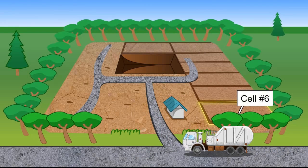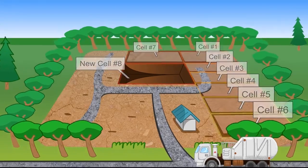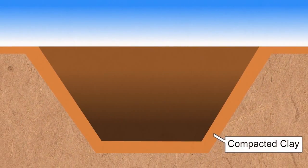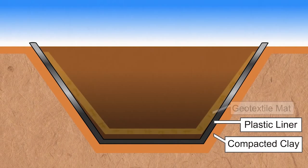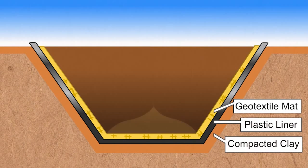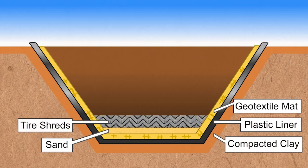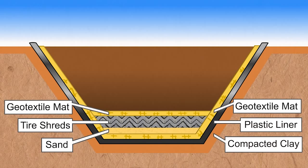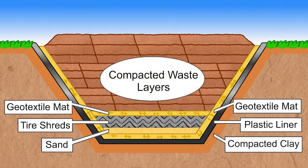We compact this waste in engineered bioreactor landfill cells. Each cell includes a layer of compacted clay, a man-made liner and geotextile mat. These are topped with a layer of sand, tire shreds, and a second layer of geotextile mat. Your waste is then placed into the cells and compacted by equipment weighing over 50 tons.